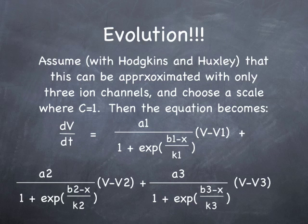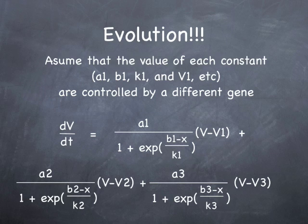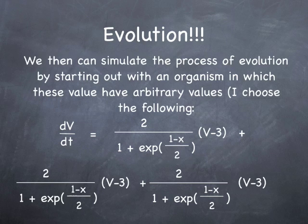So we'll assume with Hodgkin-Huxley that we can approximate this neuron with only three ion channels, and we'll choose a scale where c equals one. Then the equation reduces to dv/dt equals the sum of three of these weighted Boltzmann functions. And then the kicker just becomes finding the right values of a1, b1, and k1 in order to do this. So how can we do this with evolution? Well, we'll assume that the value of each one of these constants is controlled by a different gene in the genome. And then we'll simulate the process of evolution here by starting out with the organism, which has an arbitrary value for these guys. I start out with these values in my computer simulation.